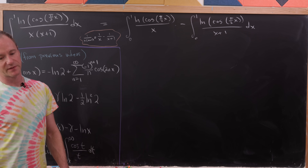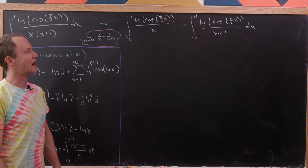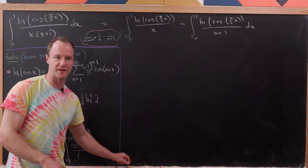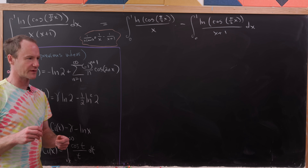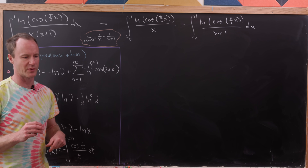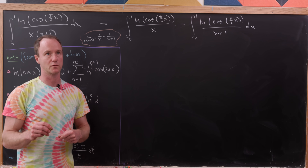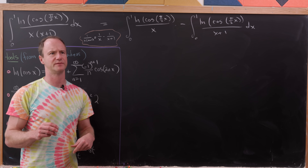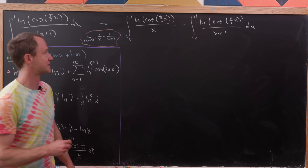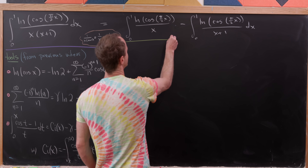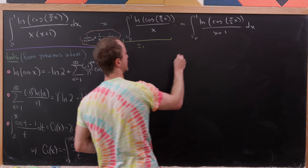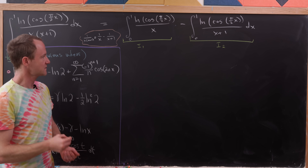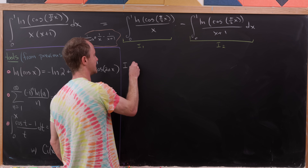We give these two integrals names so we can work with them individually. We'll call the first one I₁ and the second one I₂, and now let's work on I₁ first. We'll be swapping the order of integration and summation freely, and all the required convergence conditions are satisfied here.